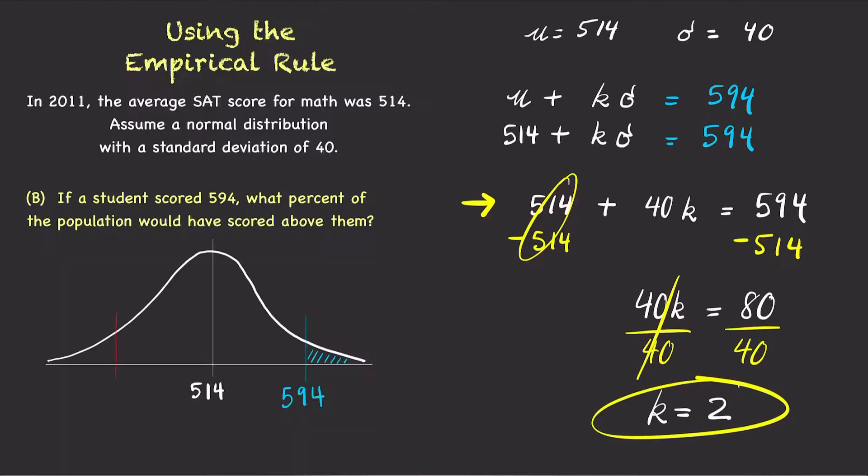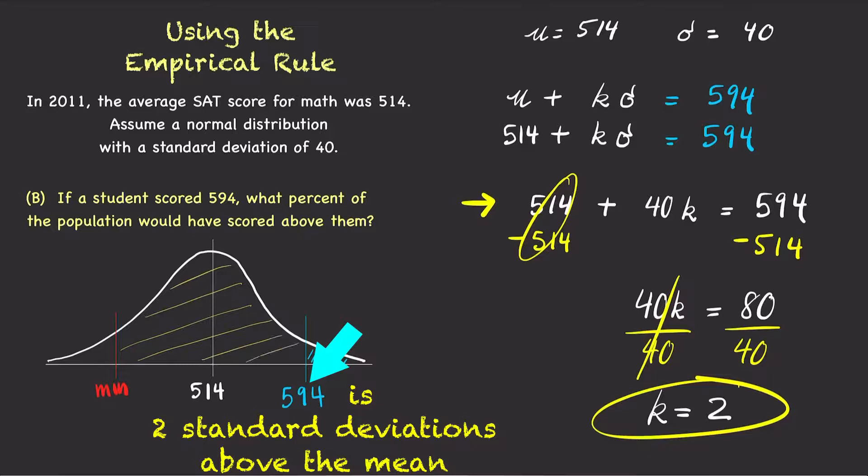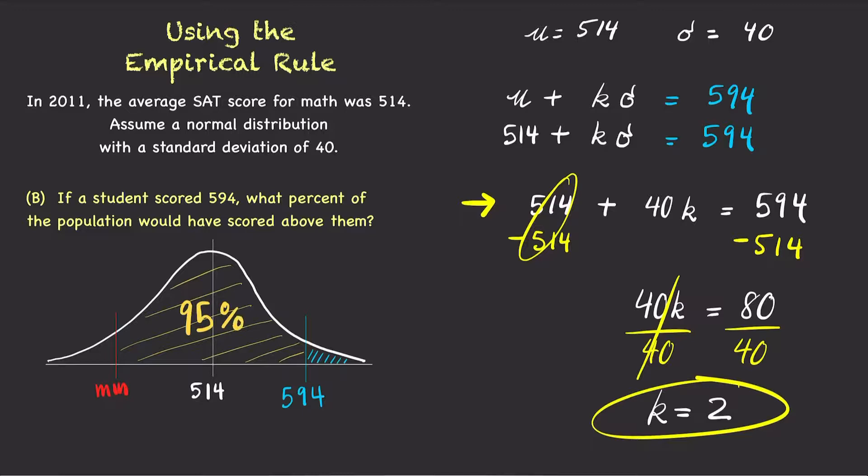Since k equals 2, we know that 594 is two standard deviations above the mean. Note that the empirical rule says 95% of the population falls within two standard deviations of the mean. If two standard deviations contain the middle 95% of the population, then 5% would fall outside of that.